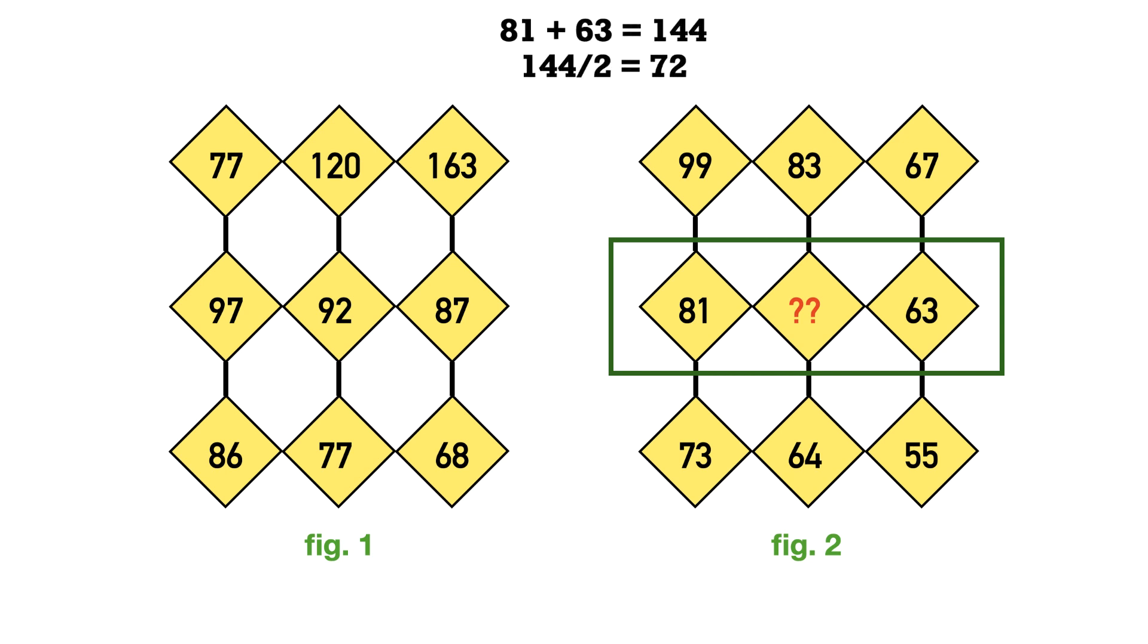Add first and last number, that is 81 plus 63, which equals 144. Now divide it by 2, which results in 72, which is the missing number here. Thus the answer to this puzzle is 72.